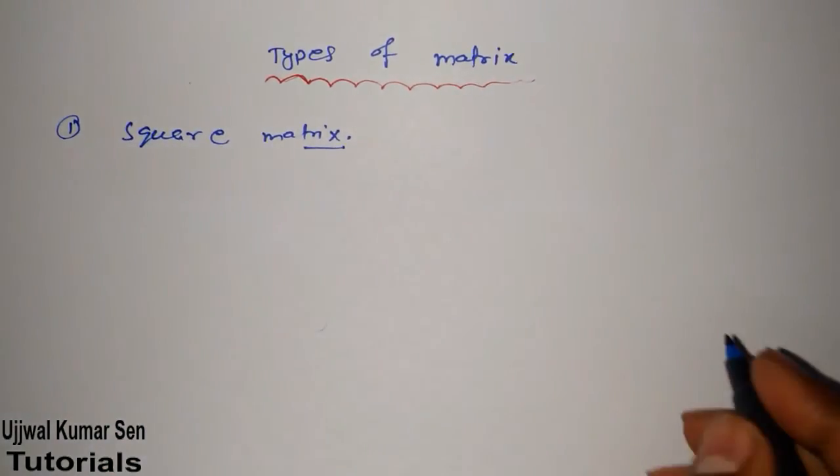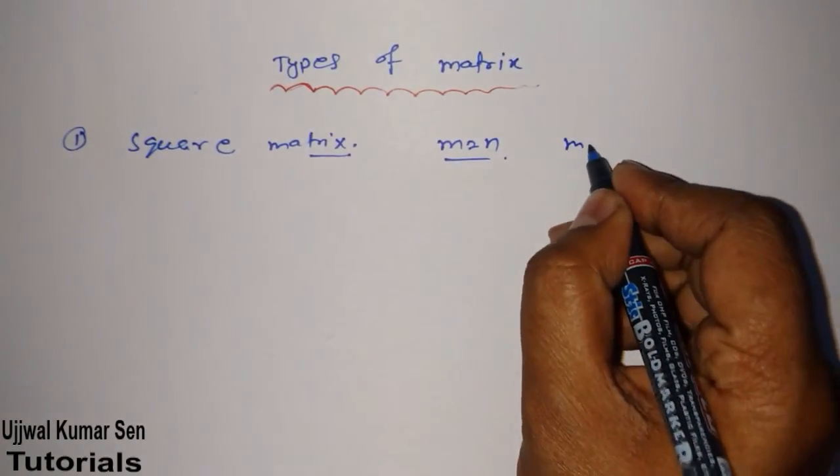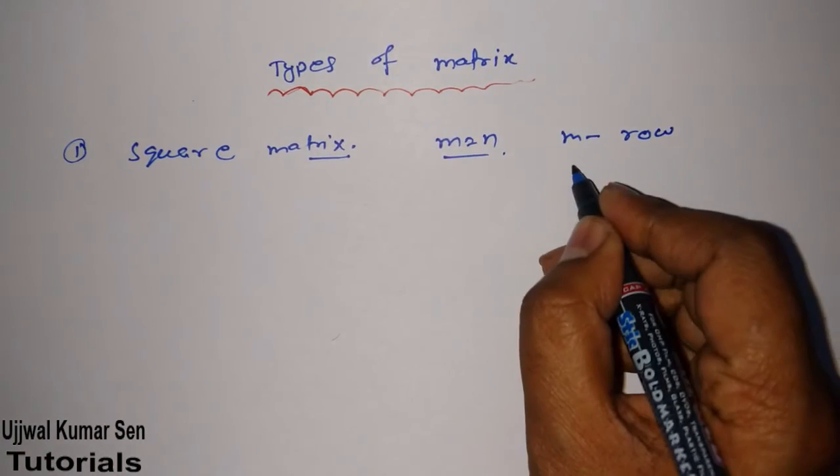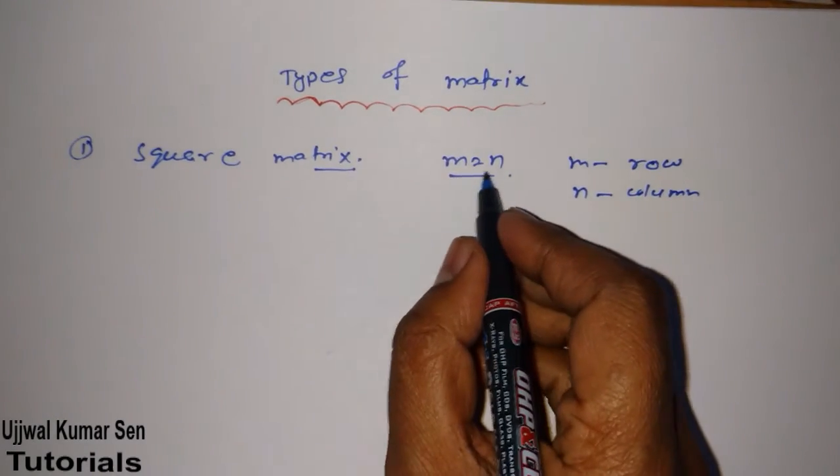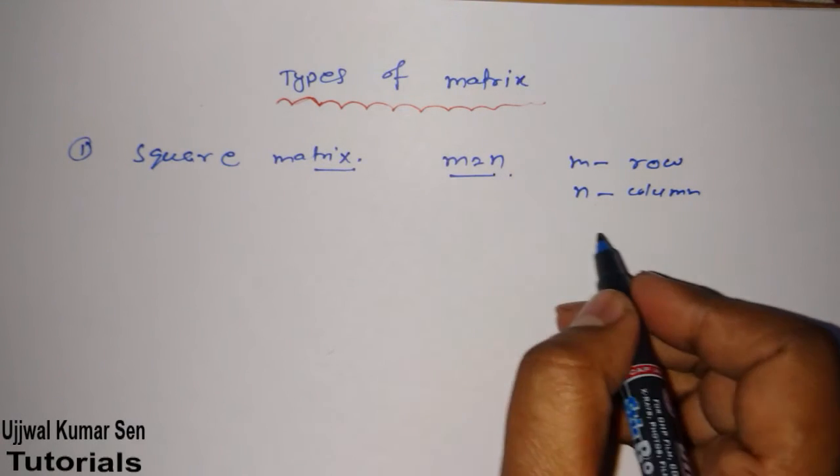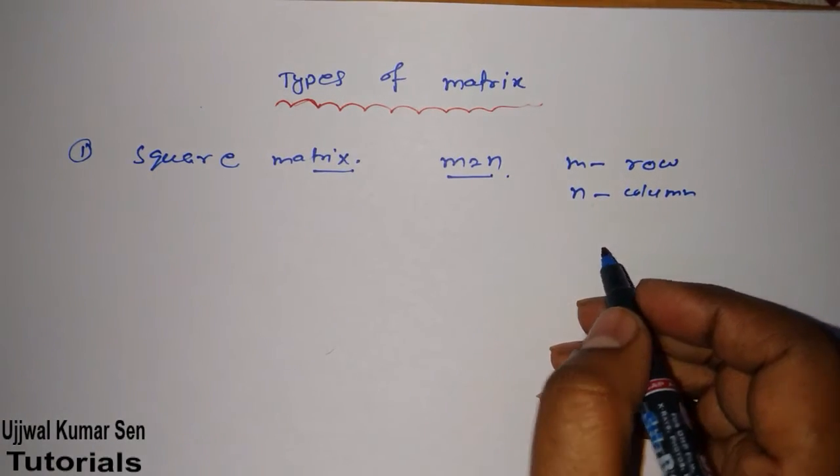So what is square matrix basically? When rows is equal to column, let's say M is row and N is column, so when row is equal to column in any matrix that is known as square matrix, for example